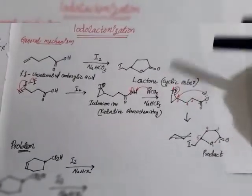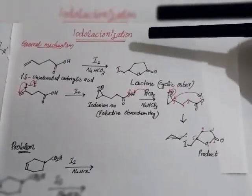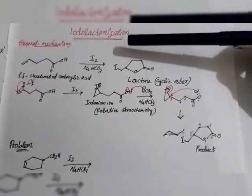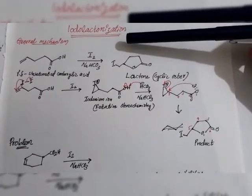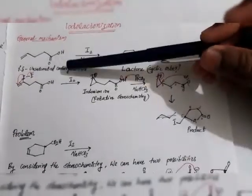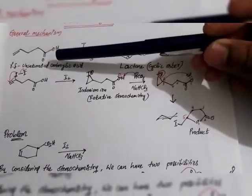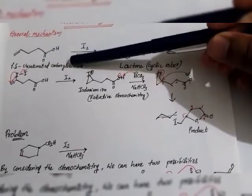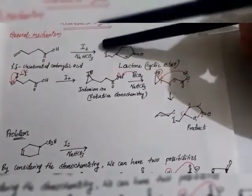Hello students. Today we are going to discuss an important topic: iodolactonization. The main precursor for this reaction is a gamma-delta unsaturated carboxylic acid.